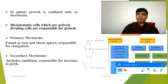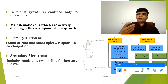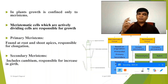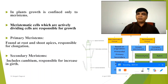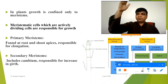These meristems, on the basis of their position and their origin, are of different types. Primary meristems are found in the root or the shoot apical apices, as seen in this diagram. They are responsible for the elongation and the increase in the length of the plant.